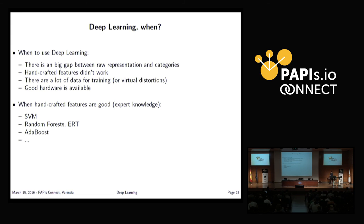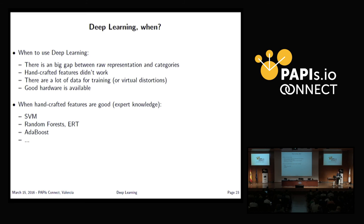When should you avoid deep learning? Of course, if you don't have good hardware. Also, when classical handcrafted features representing your problem are good enough and you already get good results — meaning there's no big gap between the raw representation and the target — then keep using support vector machines, random forests, extremely randomized trees, AdaBoost, K-nearest neighbors, mixtures of Gaussians, or whatever you prefer.